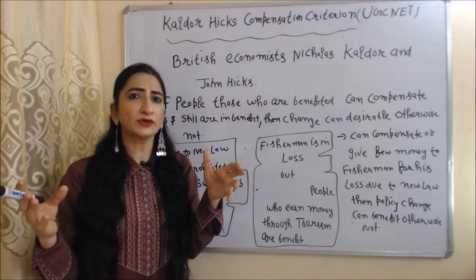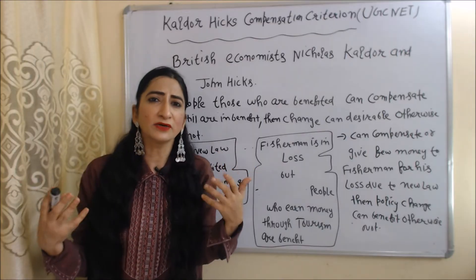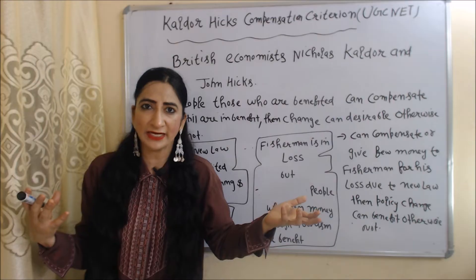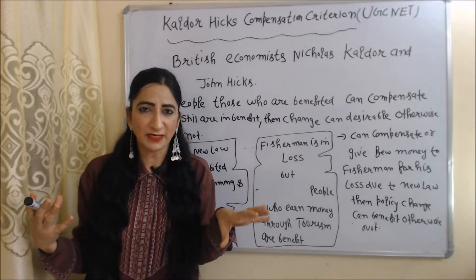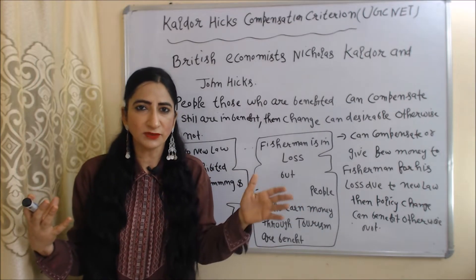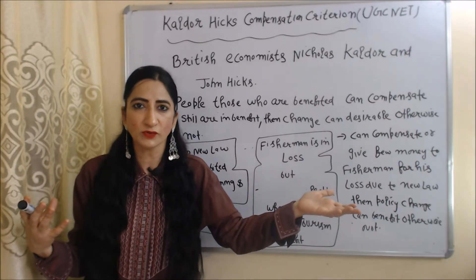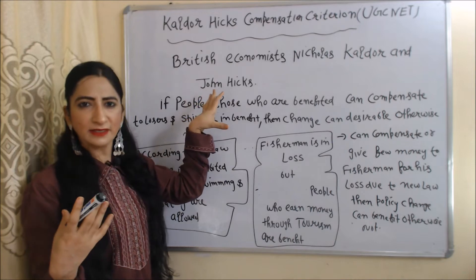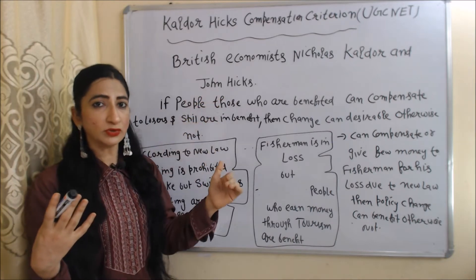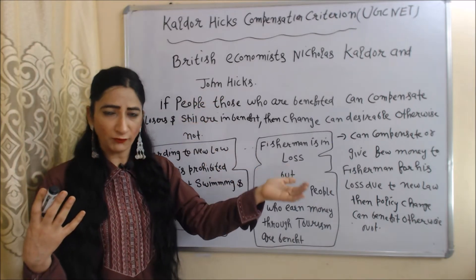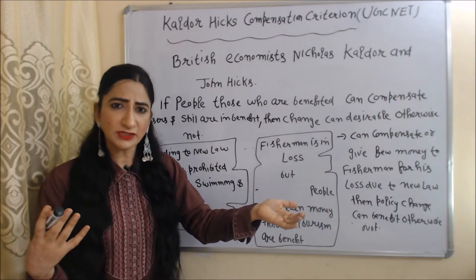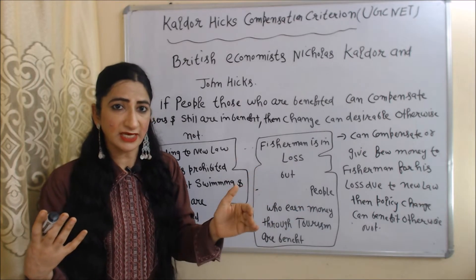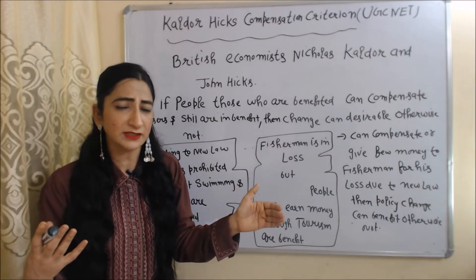As we know, according to Pareto optimality, we cannot increase the benefit of one person without making a loss for any other person. But according to Kaldor and Hicks, if people who are benefited through welfare can compensate the loser and still remain in benefit, in such a case, the change can be desirable, otherwise not.